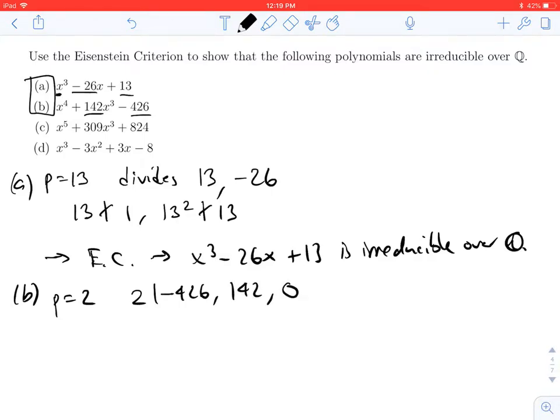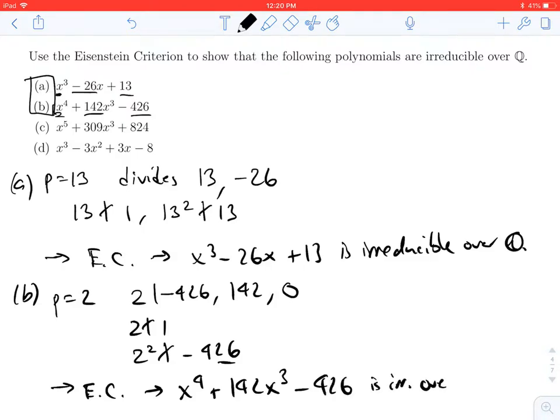which there's a lot of 0 coefficients. 2 does not divide 1, which is the leading coefficient for x to the 4th, and 2 squared, which is 4, does not divide negative 426. You can check that by looking at the last two digits. Therefore, Eisenstein's criterion shows that x to the 4th plus 142x cubed minus 426 is, again, irreducible over Q.